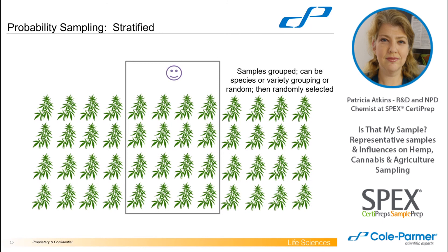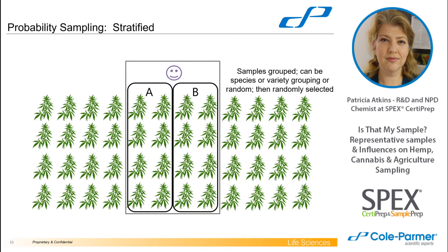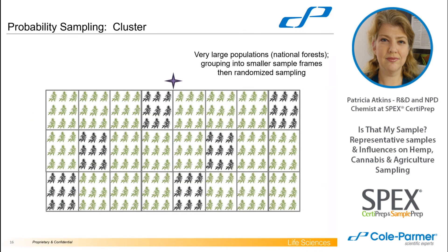Then you have stratified sampling — where you might have multiple groups, like two different varieties growing in a field. You sample both varieties but keep them separate: variety A here and variety B here, and then randomly sample those groups. And then if you have a really big population, like a national forest, you use cluster sampling. You divide the entire space into grids, each with an identification, and then randomly sample within selected grids — for example, grids 1, 4, 7, 24, and 8.